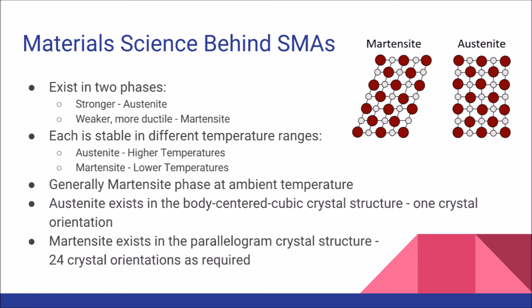In general, the martensite phase occurs at ambient temperatures. As you can see, the austenite phase exists as a body-centered cubic crystal structure, having only a single possible crystal orientation. The martensite phase, in contrast, exists as a parallelogram crystal structure, which can have 24 crystal orientations as required.